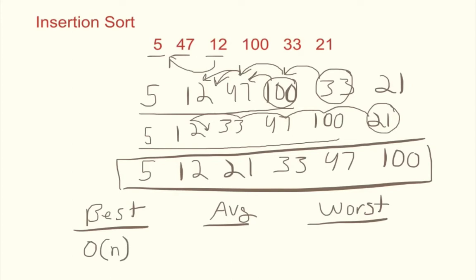Best case is actually going to be order of n. Average and worst are going to be the same. They're going to be order of n squared.